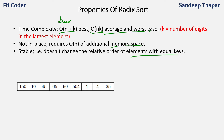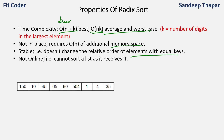Radix Sort is not an online algorithm, meaning we cannot sort a list as it receives elements. Before starting, Radix Sort needs to know the maximum element and the number of digits in it, so it must pre-process the array beforehand. This makes Radix Sort not an online algorithm.